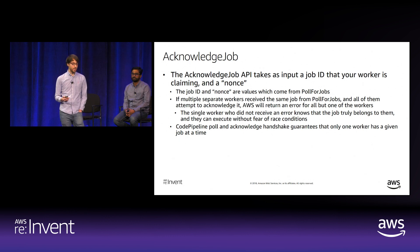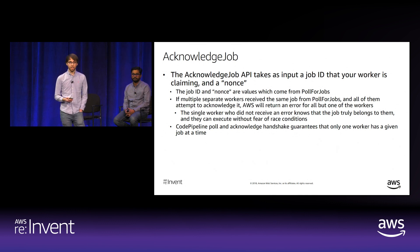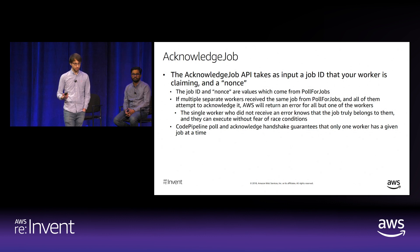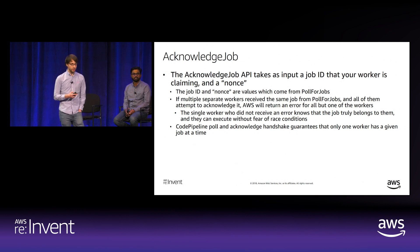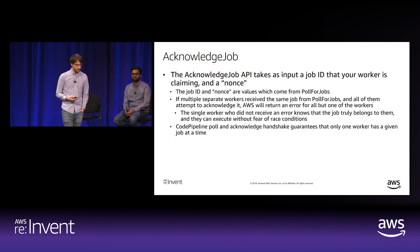The AcknowledgeJob API takes a job ID and nonce from PollForJobs—your way of saying 'this job is mine.' If multiple workers receive the same job and all try to acknowledge simultaneously, AWS returns an error to all but one. The single worker that did not receive an error knows the job truly belongs to them and can execute without fear of race conditions or duplicate work. CodePipeline's poll-and-acknowledge handshake guarantees only one worker has a given job at a time.